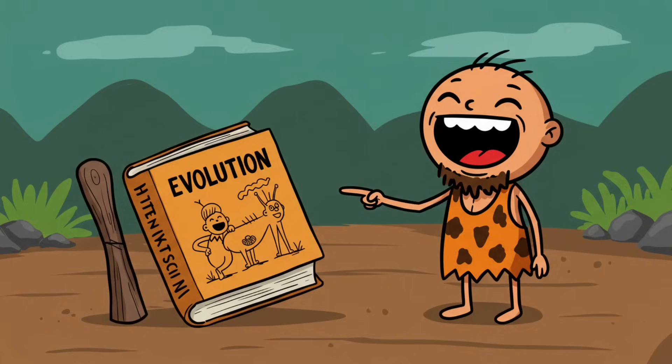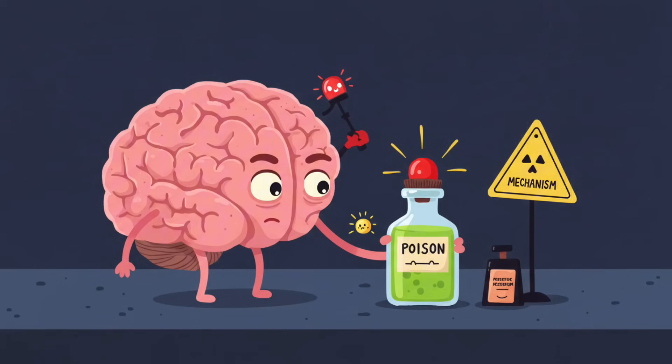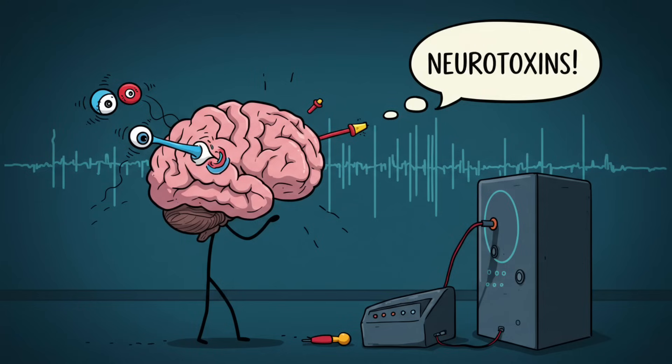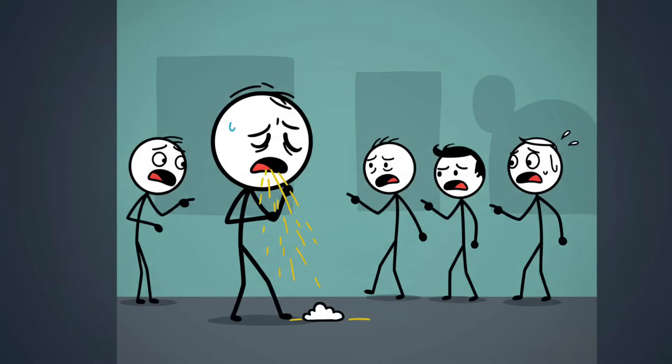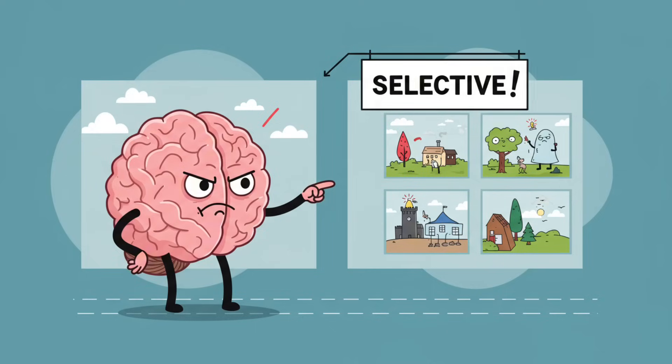The evolutionary backstory is actually hilarious. Scientists think motion sickness evolved as a protective mechanism against poisoning. When your brain senses a disconnect between visual input and inner ear signals, it assumes you've ingested neurotoxins that are scrambling your balance. Your body's solution? Vomit. Yeah, evolution literally decided the safest way to deal with potential poison is to eject it immediately, preferably in public.